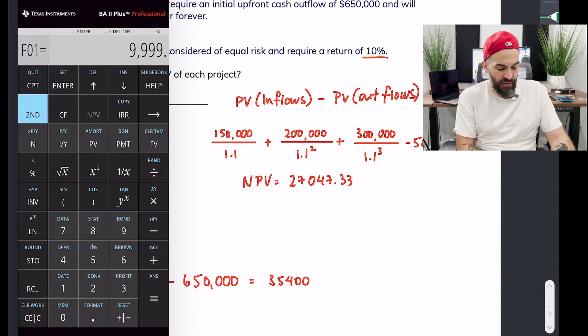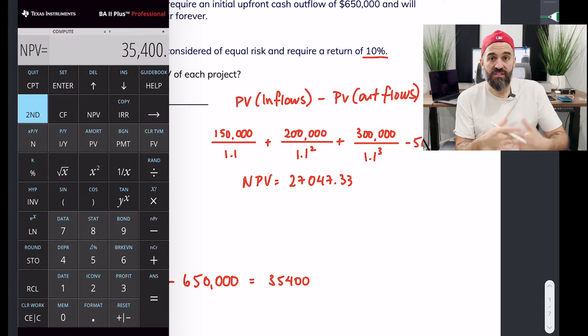The idea here is you want to make the calculator think that you're getting essentially an infinite number of payments. So if I go to NPV now, press 10 as my rate, you'll get $35,400. So in theory you can't do it but technically you can trick the calculator and get the calculator to do a perpetual calculation just by setting your frequency to as high a number as you can.